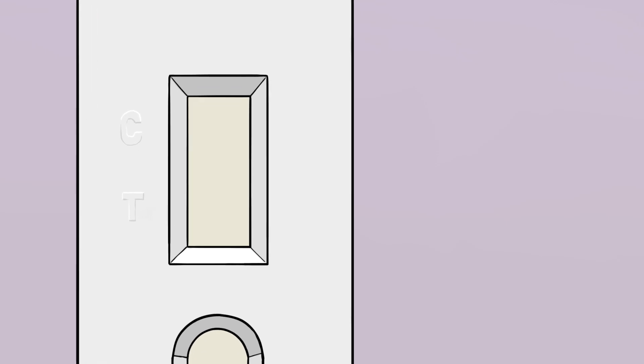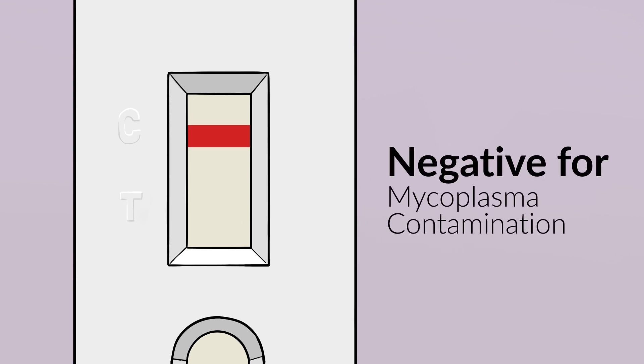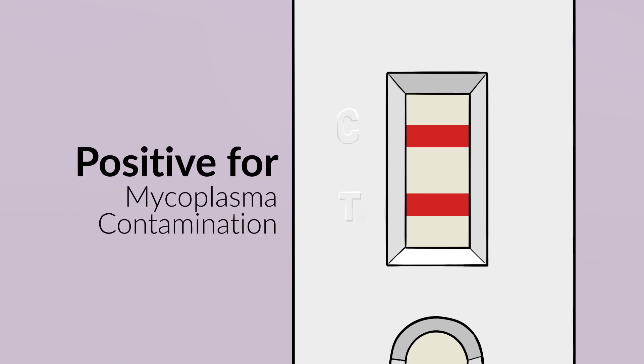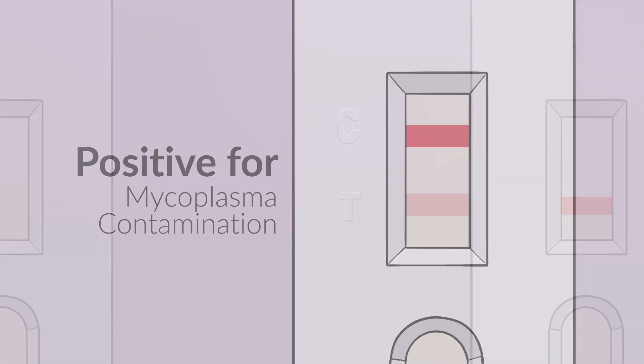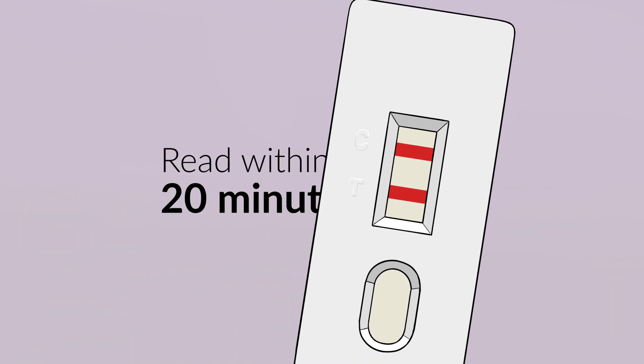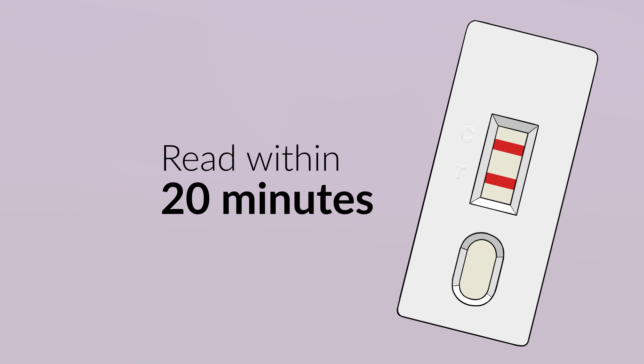If you see one band, the C-band only, it indicates that mycoplasma is not detected. If you see two bands, the C-band and T-band, it indicates that the test is positive for mycoplasma contamination. A faint T-band also indicates a positive test. No control band indicates the test is invalid. The bands will appear within 5 minutes. Be sure to read the results within 20 minutes after buffer loading.